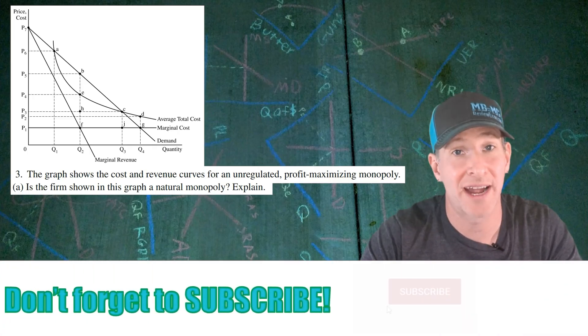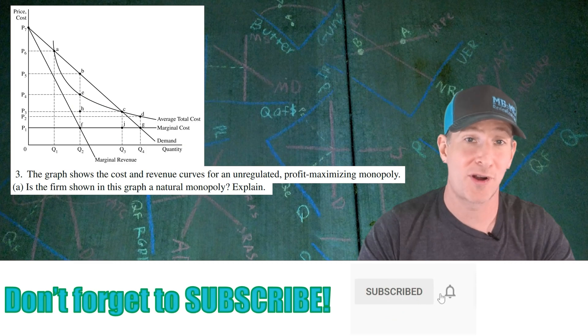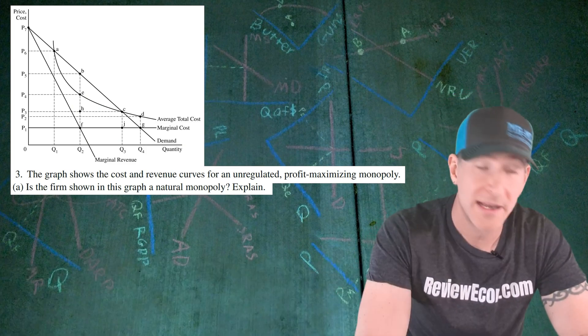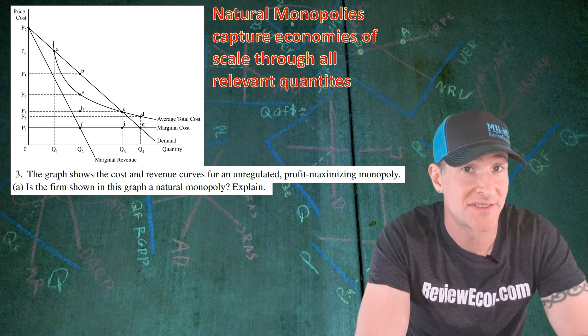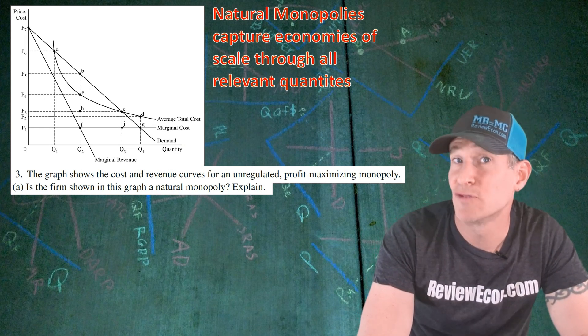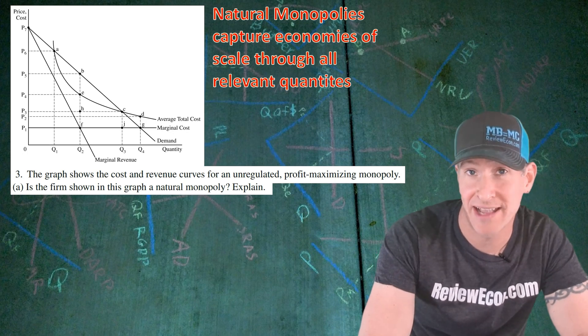Now this question shows us a graph for an unregulated monopoly and part A asks us if this is a natural monopoly and we have to explain. Remember, natural monopolies always capture economies of scale through all relevant quantities. That means the average total cost curve will be downward sloping through the allocatively efficient quantity.